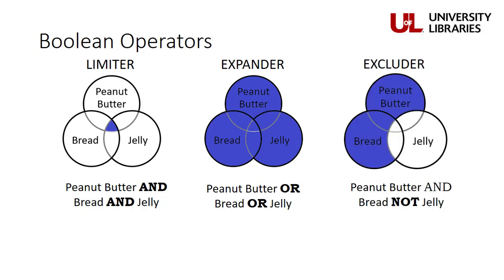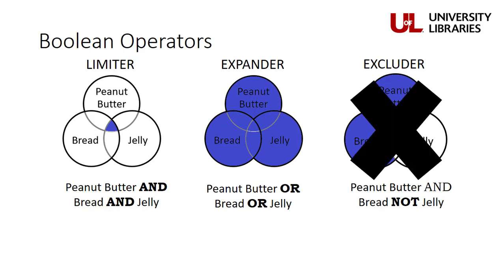NOT is an excluder. So if I asked for peanut butter AND bread, NOT jelly, I would get results on peanut butter, peanut butter and bread, and peanut butter sandwiches, but nothing at all on jelly. I want to encourage you to avoid using the term NOT when searching, because you can accidentally end up excluding literature that you don't mean to. So concentrate on using AND and OR instead.